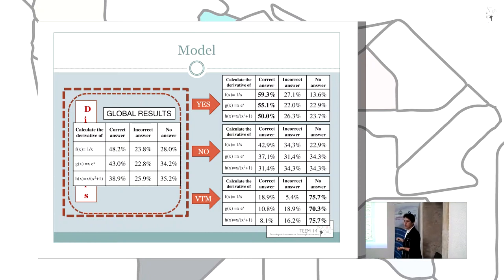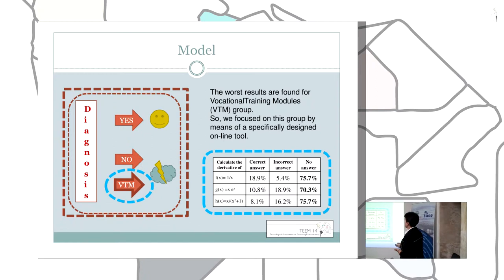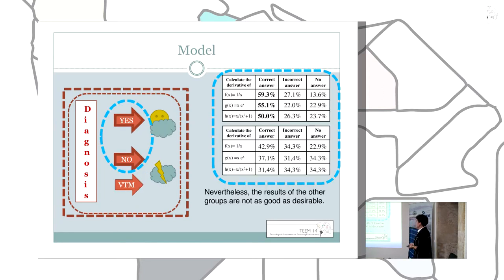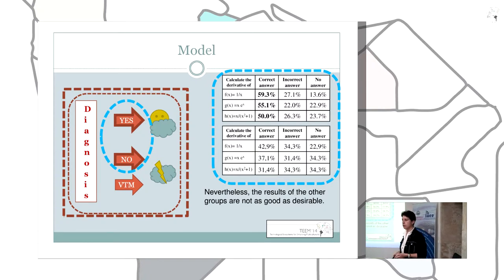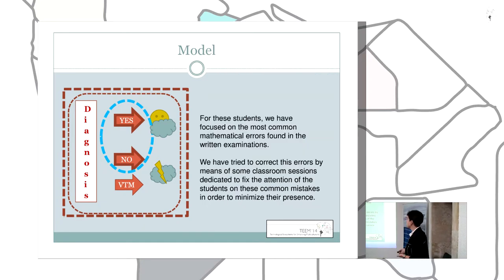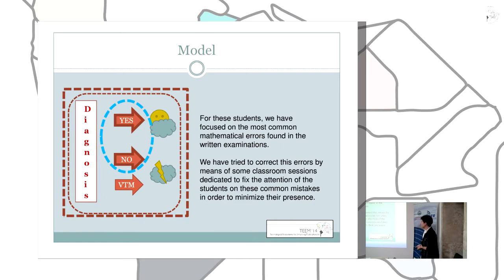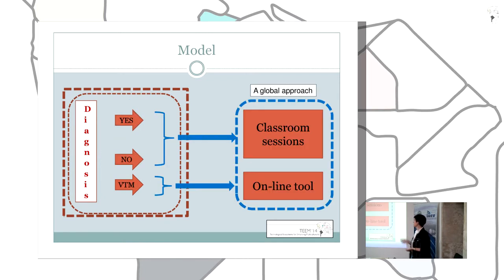The majority of vocational training students don't answer these questions. The worst results are found in the vocational training modules group, so the first step is to design a specific online tool to address their situation. Nevertheless, the results of the other groups are also not very good — those students should be able to answer these questions — so we need a different approach for them. For those students, we focus on the most common mathematical errors committed in written examinations and try to correct these errors through dedicated classroom sessions. This constitutes the global approach: two levels of intervention because the problematics are different.